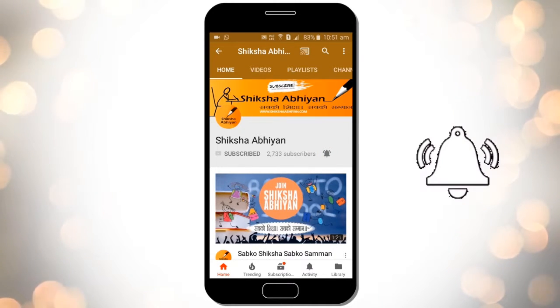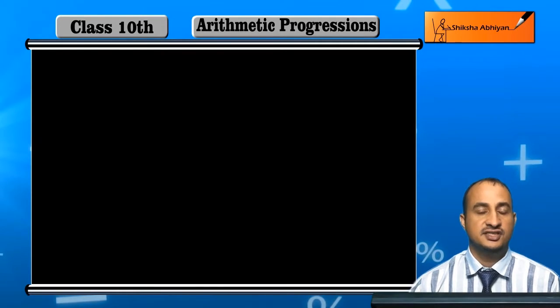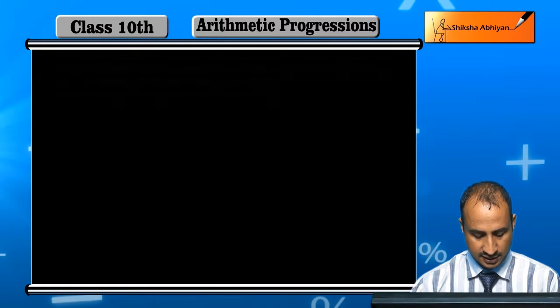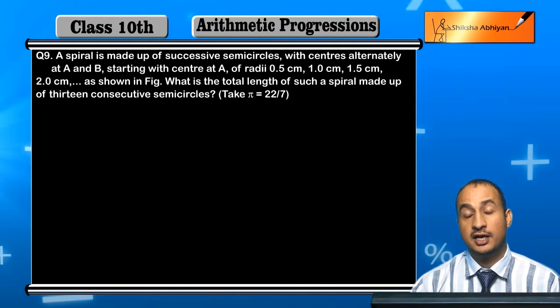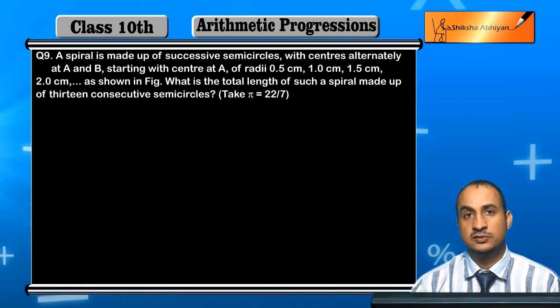Now students, see question 9. Question 9: A spiral is made up of successive semicircles.